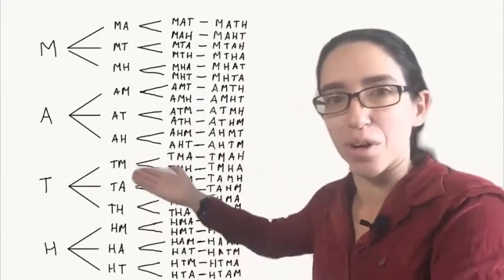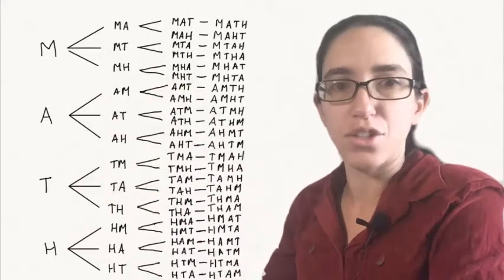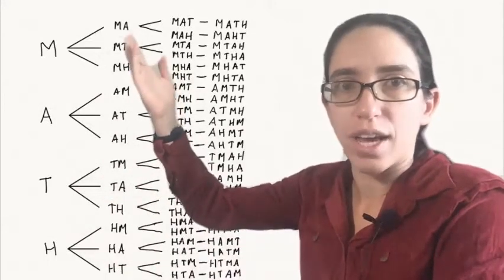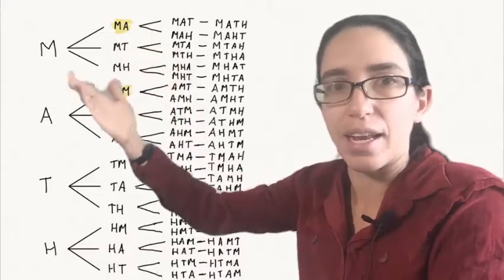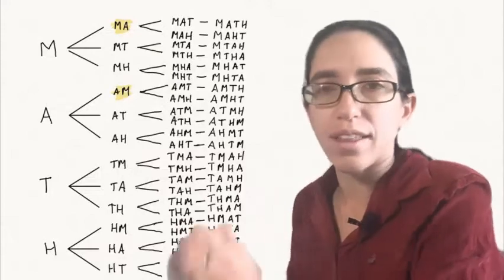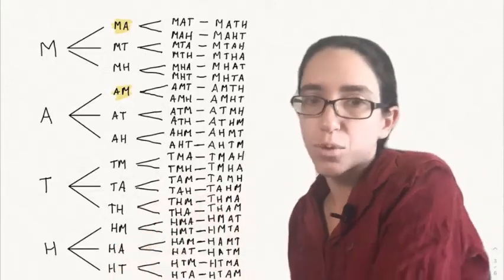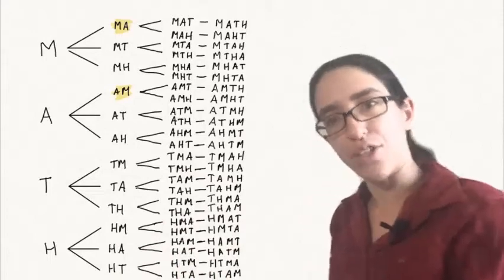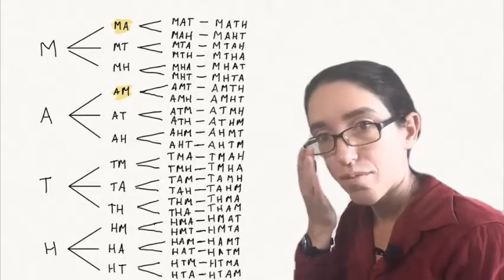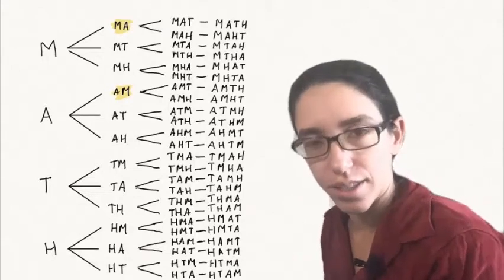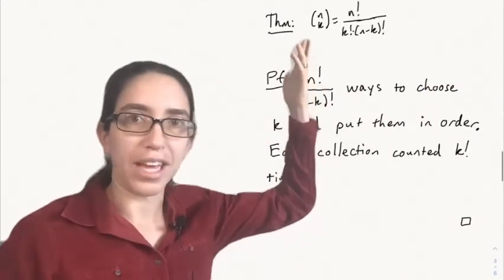Let's go back to the chart with math that we had before. It's tempting to say the answer is the number of possibilities in the second column, but notice those are ordered — so some things are counted twice. For example, both M-A and A-M appear in the sequence. So the pair M and A — the letters I'm coloring red — is counted twice. In fact, every pair is counted exactly twice. So I have four times three, which is 12, in that column. Dividing 12 by two gives six possibilities for the number of ways to choose two letters with no particular order.